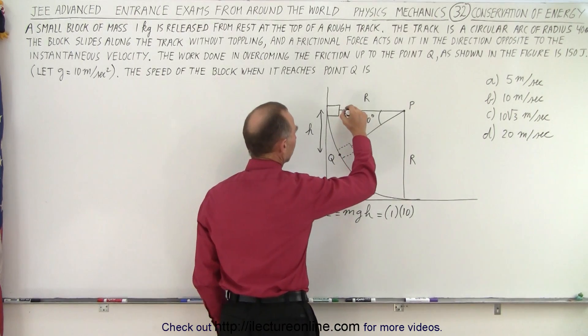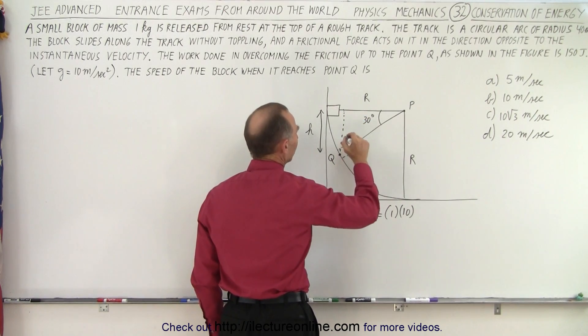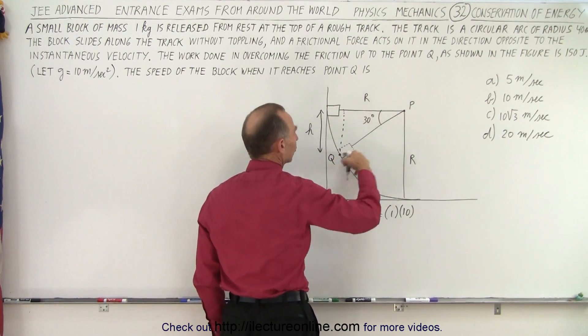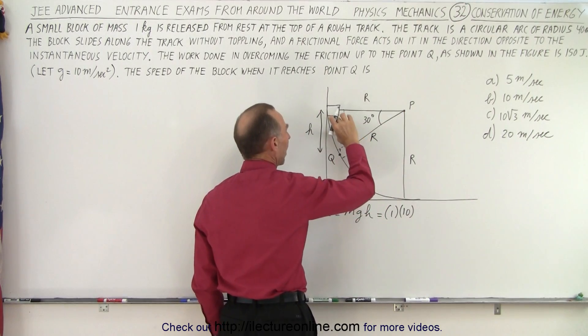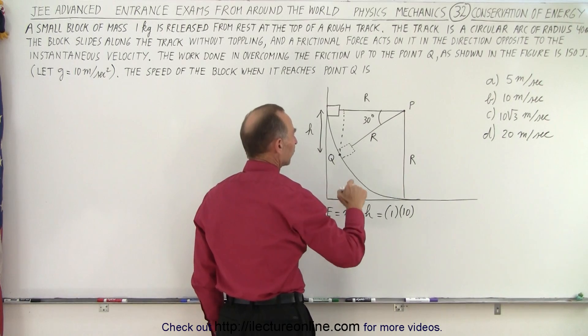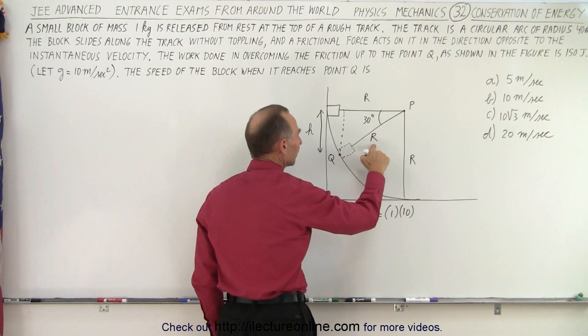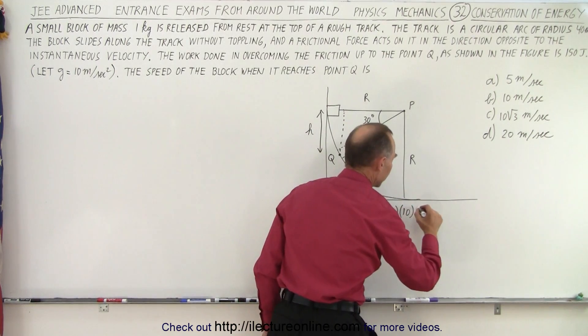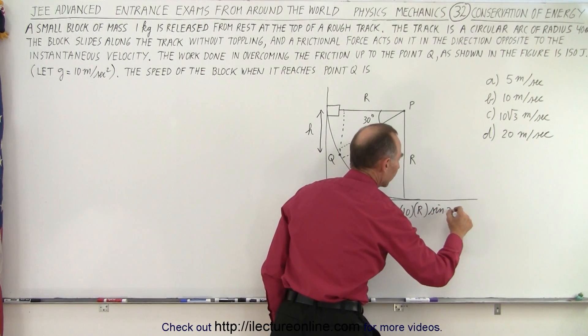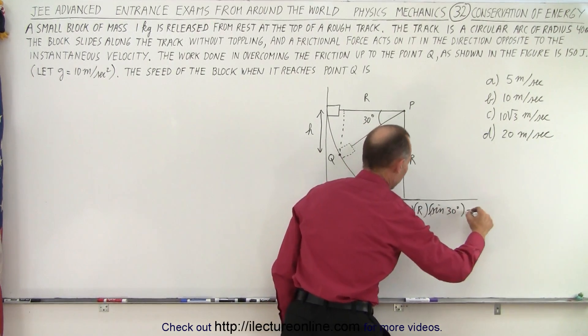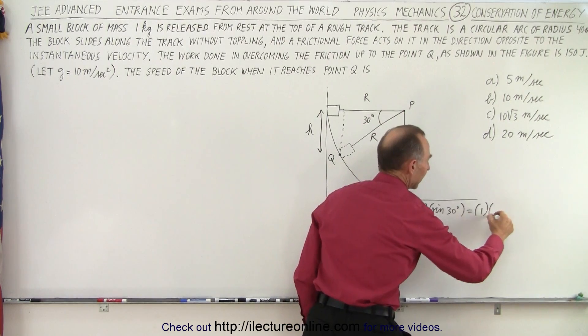Well notice if we draw a triangle right here we can see that H can be determined by this triangle. This is R, that's the hypotenuse, that's the opposite side to the angle. So therefore H is going to be R times the sine of the angle of 30 degrees. And of course that's going to be equal to 1 times 10.